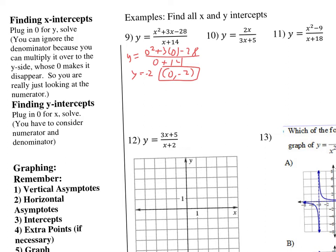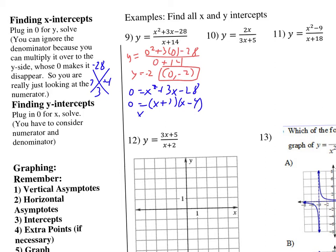For the x-intercept, set y equal to 0 — equivalently, set the numerator equal to 0. The denominator gave us the vertical asymptote; the numerator gives us the x-intercept. Factor the numerator: two numbers that multiply to negative 28 and add to 3 are 7 and negative 4, giving (x plus 7)(x minus 4). So x-intercepts are at x equals negative 7 and x equals 4, written as points (negative 7, 0) and (4, 0).